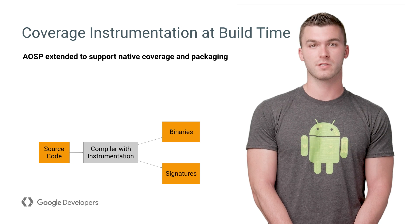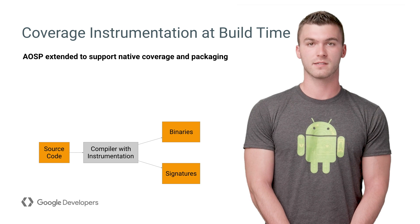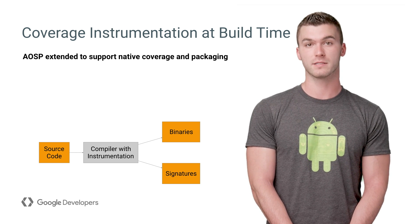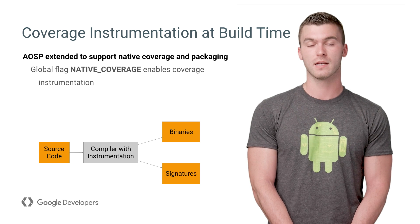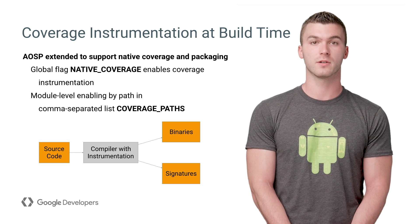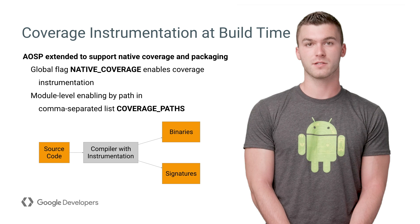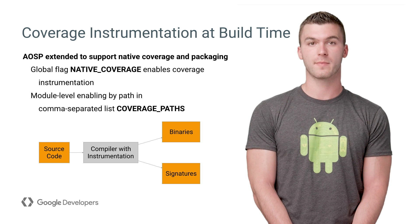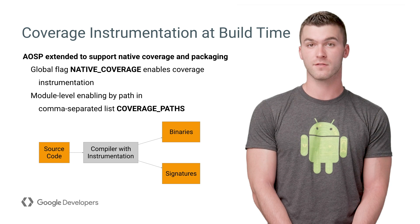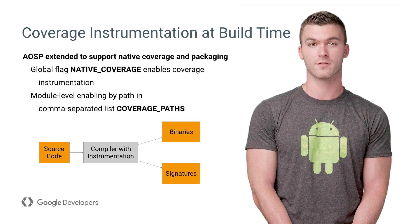Supporting coverage instrumentation in the build system is a key component to producing coverage reports. The Android build system has been extended to support coverage instrumentation and packaging at build time with the use of two flags: native_coverage and coverage_paths. The former must be set to true in order to enable the functionality in the build system. The flag coverage_paths is used to specify the list of source paths to the files which will be instrumented for coverage. Any source files which have any of the specified paths as an ancestor will be instrumented with GCOV coverage instrumentation.